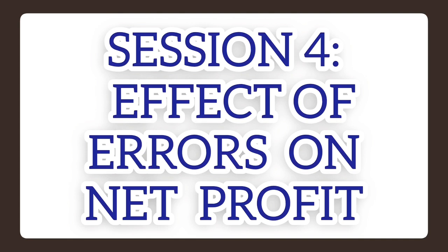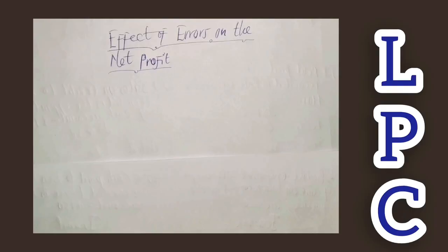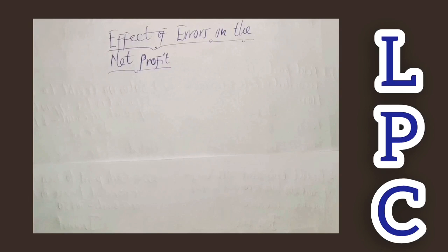Now we are going to go further to look at the effect of errors on the net profit. What is the effect of the errors that occur on the net profit of the organization? That's what we are going to look at in this video. If you are new on this channel, check the description section of this video — I've given links for the previous videos so that you can build the concept clearly before progressing to this part on correction of errors and suspense account.